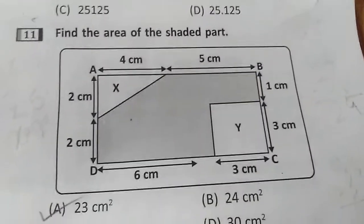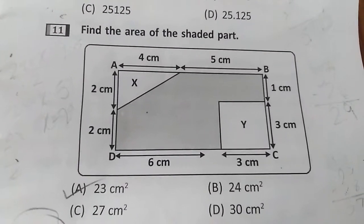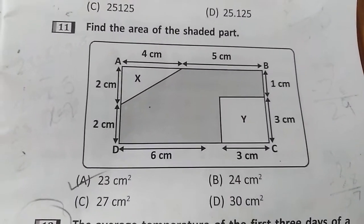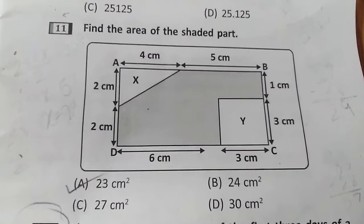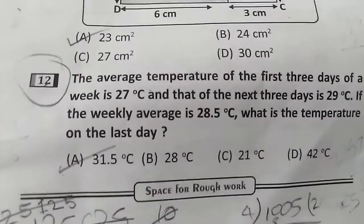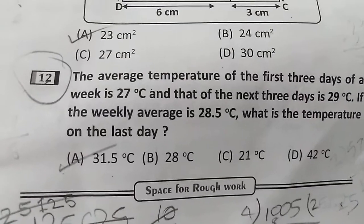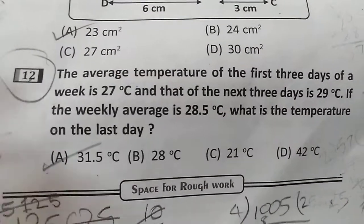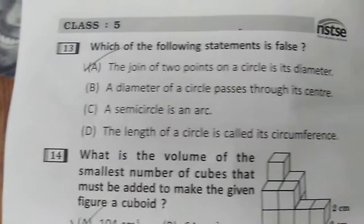Next is question number eleven. You can see question number eleven — we have to find the area of the shaded portion, and the answer is given. Next is question number twelve, and the answer is also given. Now question number thirteen.